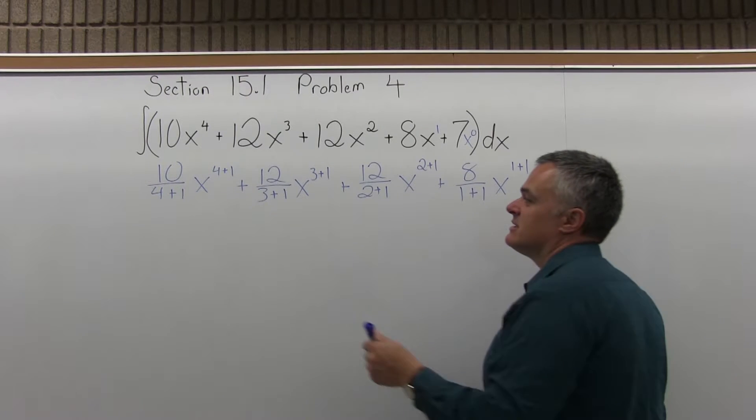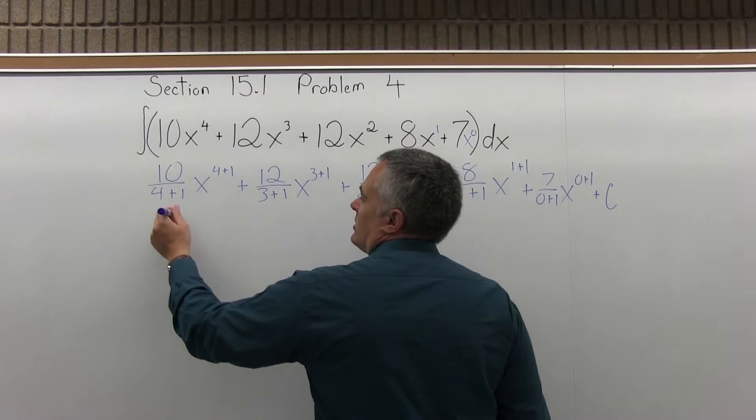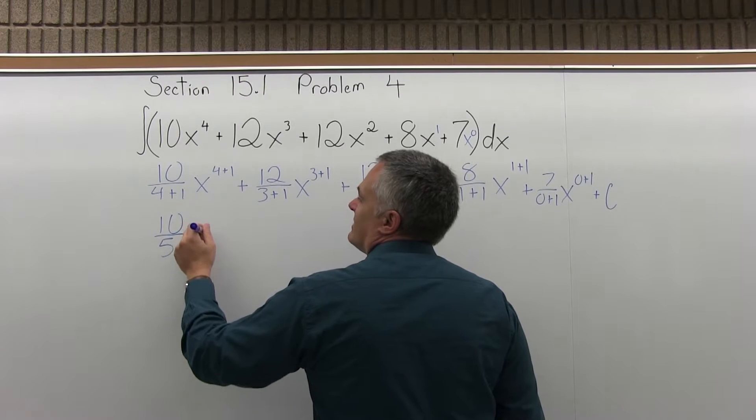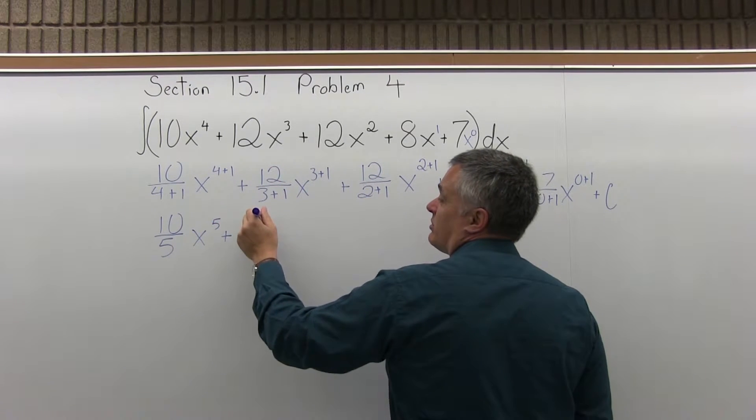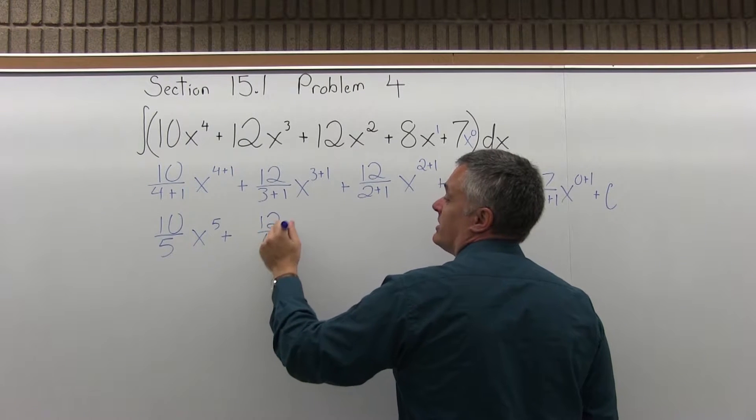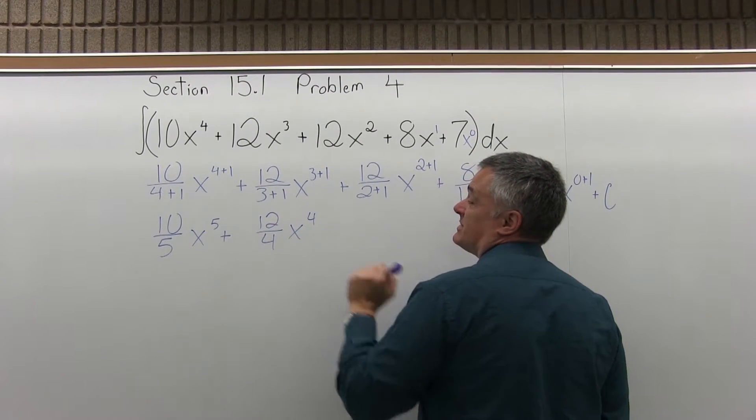So let's start to simplify this. So that's going to be 10 fifths x to the 5th, plus the next piece, 12 over 3 plus 1 will become 12 fourths, x to the 3 plus 1 becomes x to the 4th.